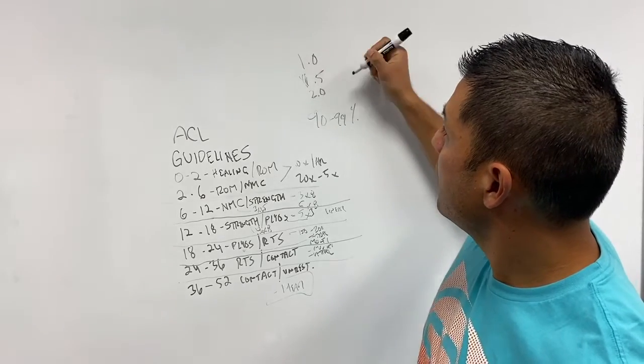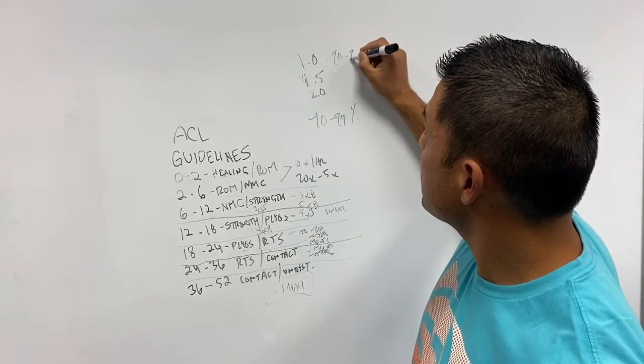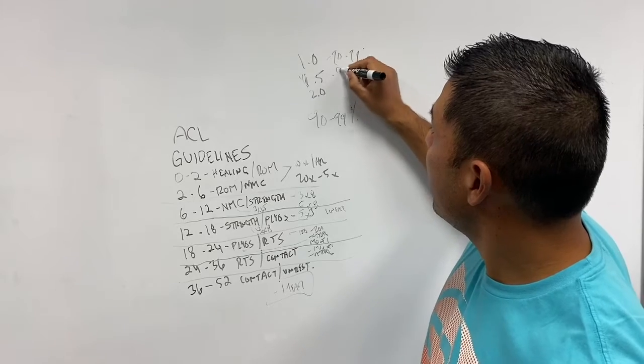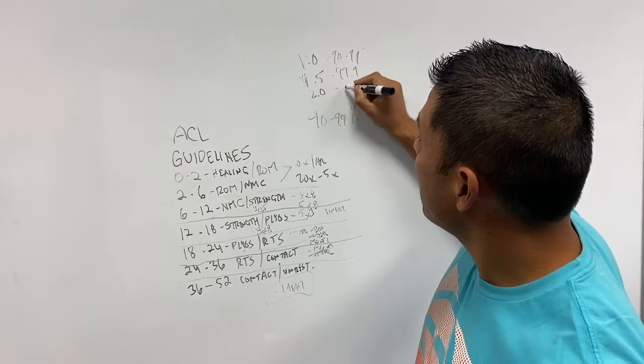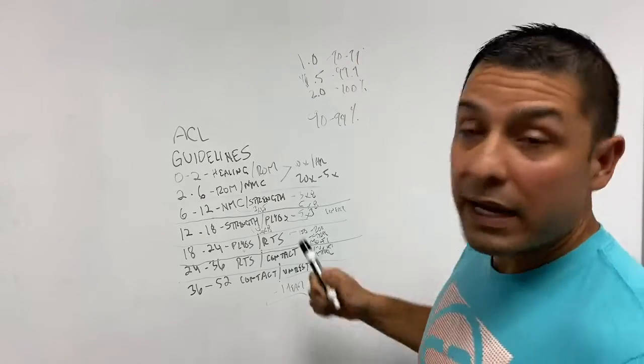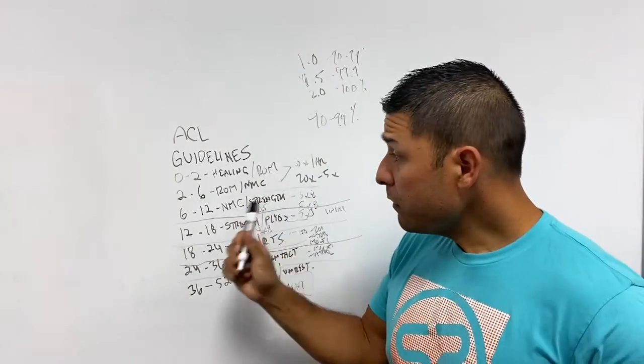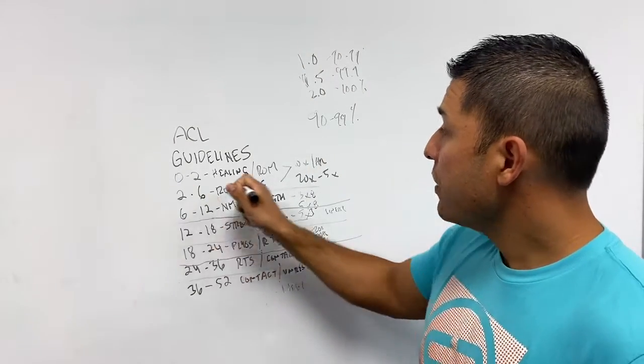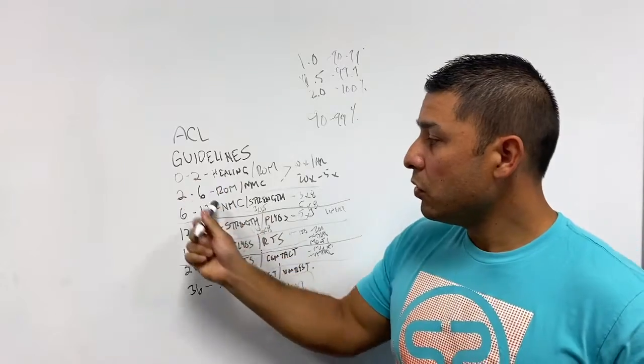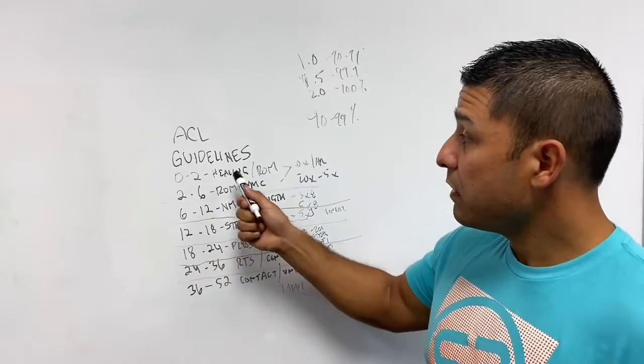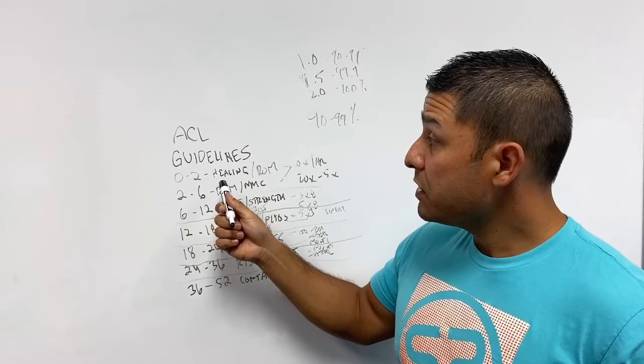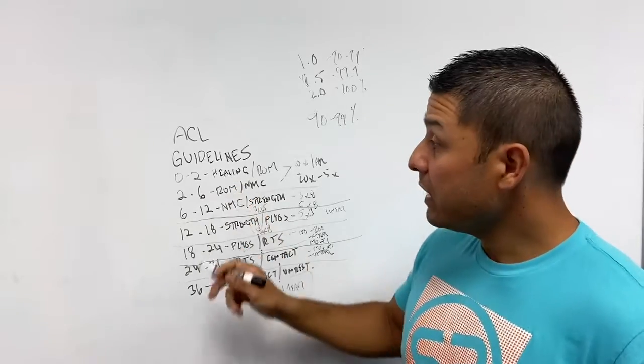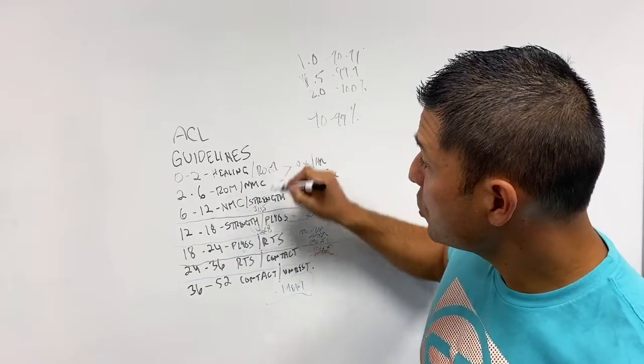At one year, they get 90 to 99%. At 1.5, they're at like 99.9%. And a lot of times at the two year mark, I hear that 100%. So understand your progressions. There is no need to try and expedite this. Understand that there are base principles to understanding what needs to happen early.